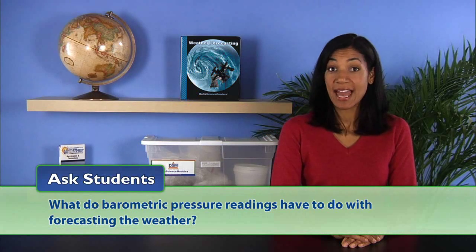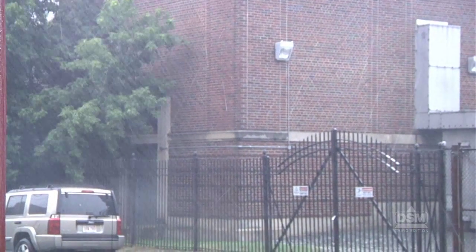Next, ask what do barometric pressure readings have to do with forecasting the weather? Students should remember from the previous activity that areas of different air pressure cause wind and that wind is the way storms cross the surface of the earth.